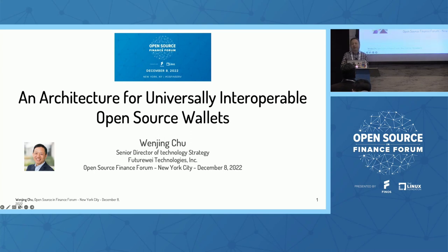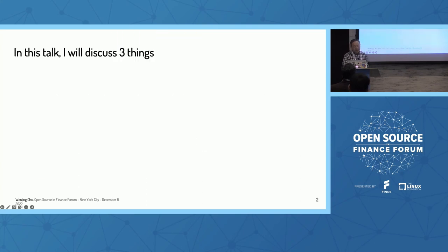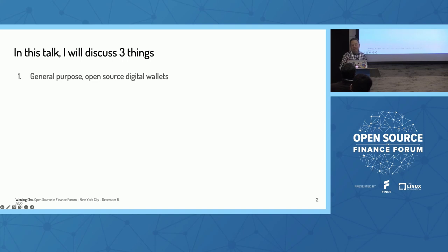And W3C — the World Wide Web Consortium — you're probably all familiar with. With that background, I'll get started. We're going to talk about architecture, and really it's three things: one is a general purpose, open source, digital world — and I want to emphasize the first phrase: general purpose.